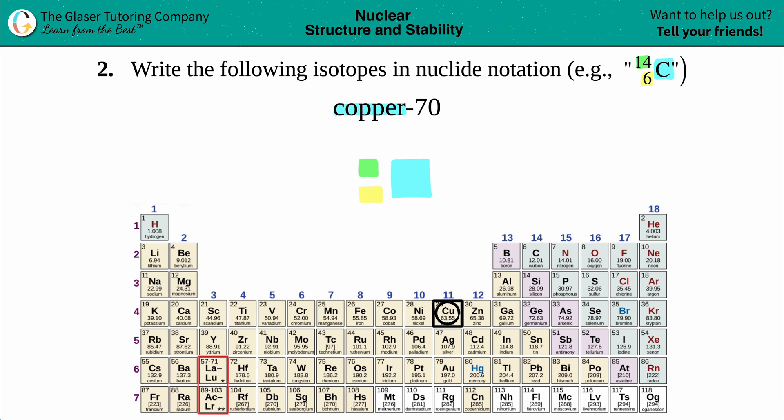Copper is Cu, so we know one-third of the pieces of the puzzle. We know that this is going to be Cu. Now we need the number on the top and the number on the bottom. Well, the next number that they gave us is 70.